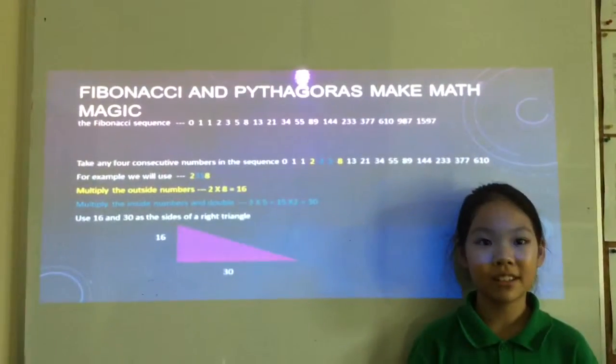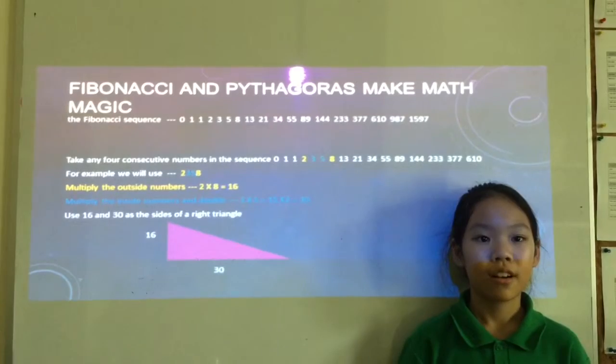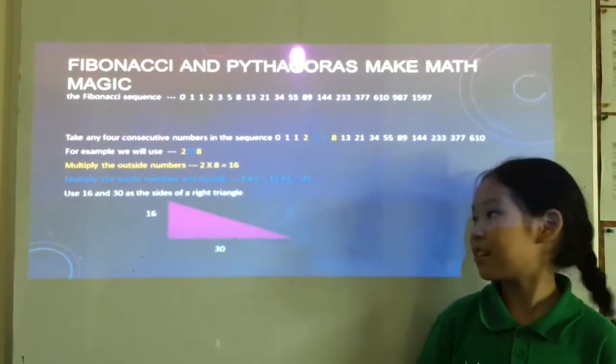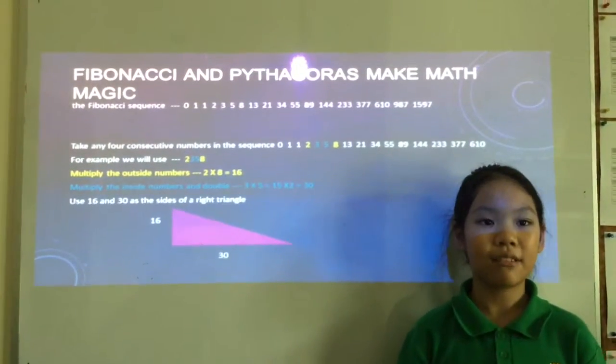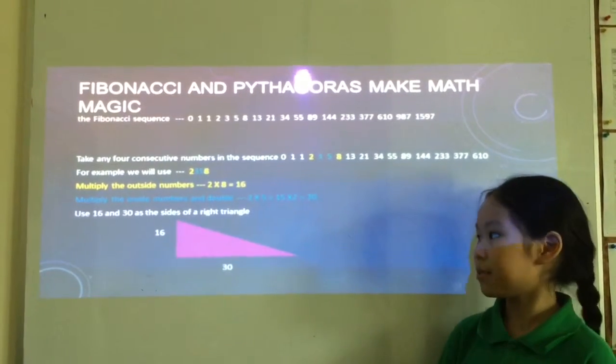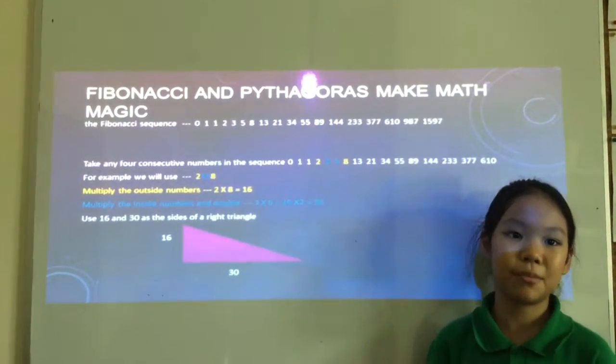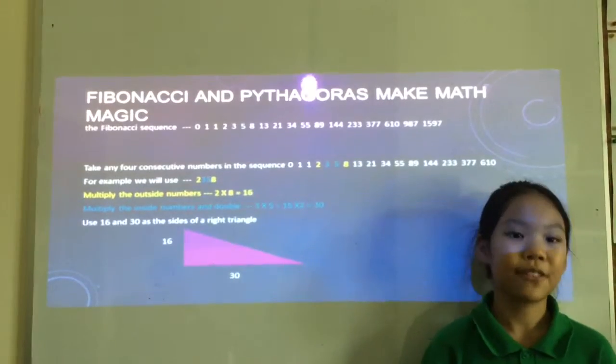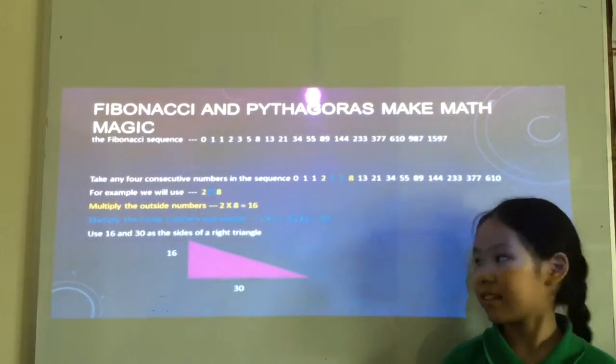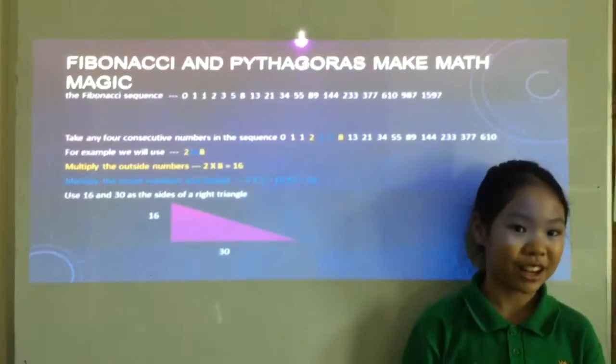Use any four numbers in a row in the Fibonacci sequence, then times the outside numbers together, then multiply the inside numbers, then double it. Use both of the numbers to make the sides of a right-angled triangle.